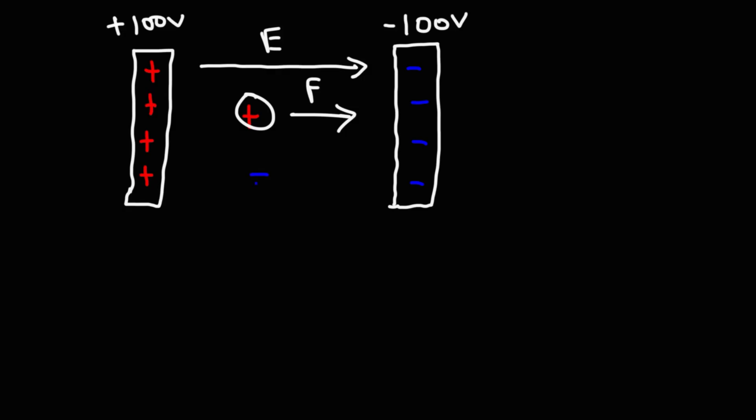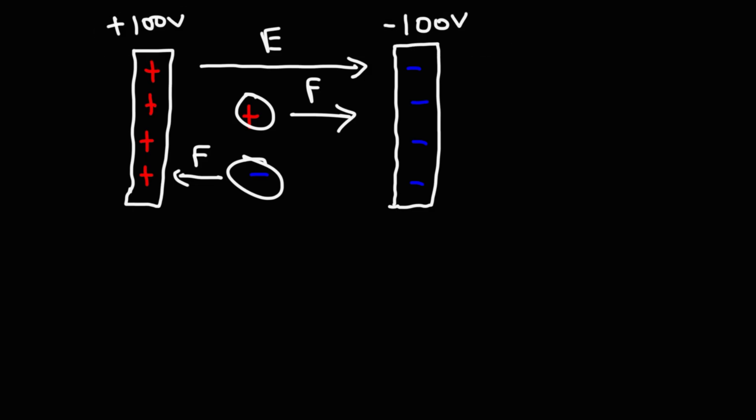Negative charges behave differently. If you put a negative charge in the electric field, it's going to feel a force that will accelerate it opposite in the direction of the electric field. The electrons are going to be attracted to the positively charged plate, and so they're going to move from a region of low potential to a region of high potential. So make sure you understand that conventional current is associated with the flow of positive charge and moves from high potential to low potential, whereas electrons, which are negatively charged, flow in the other direction — from low potential to high potential.